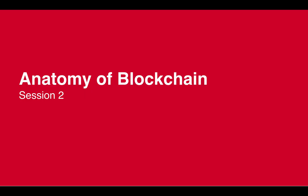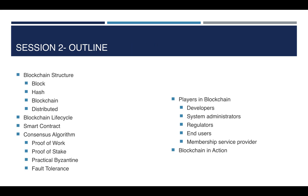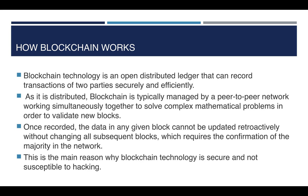Welcome back. In this section we are going to look into the anatomy of blockchain. In the previous section we learned what blockchain is, the types of networks, blockchain components, use cases and examples. In this section we are going to see what blockchain structure is, what the blockchain lifecycle is, smart contracts, different types of consensus algorithms, and players in blockchain.